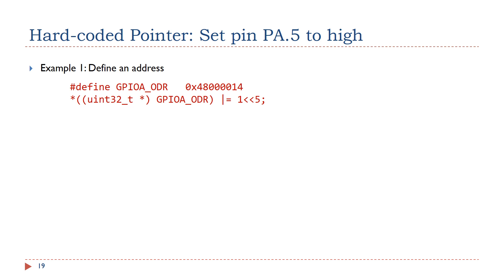So far we have discussed pointers that point to variables whose memory addresses are not directly determined by software code. How do you build a pointer which points to a given specific memory address? For example, the memory address of the output data register ODR for GPIO port A is determined by its designer. How do you build a pointer to it so that software can easily access the value of the output data register?